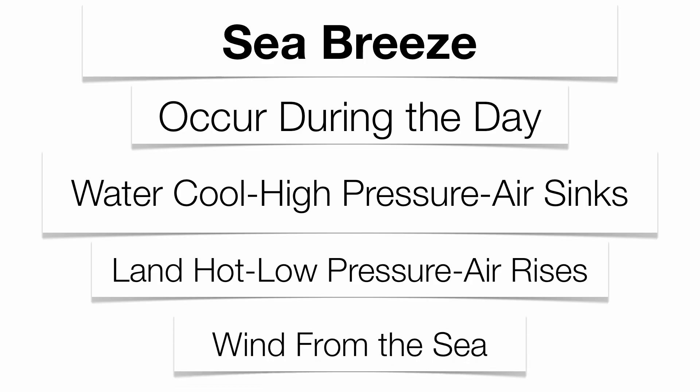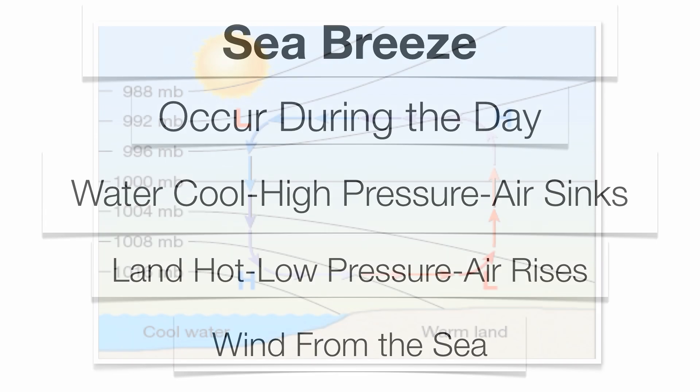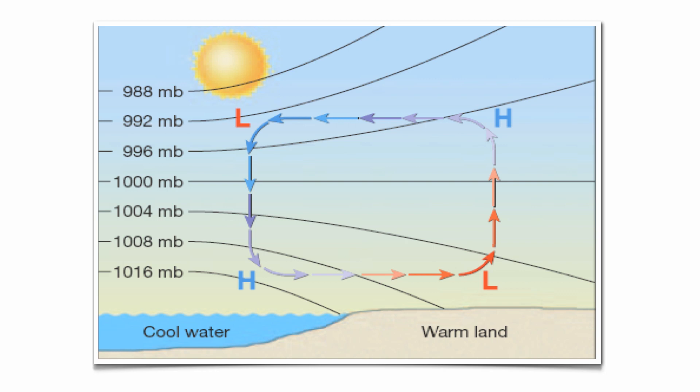Remember, winds are named from the direction they come from. If it's called a sea breeze, the wind is coming from the sea or ocean. In the diagram, warm land has low pressure and rising air, cool water has higher pressure and sinking air — giving you a convection cell from water to land. There's your sea breeze.